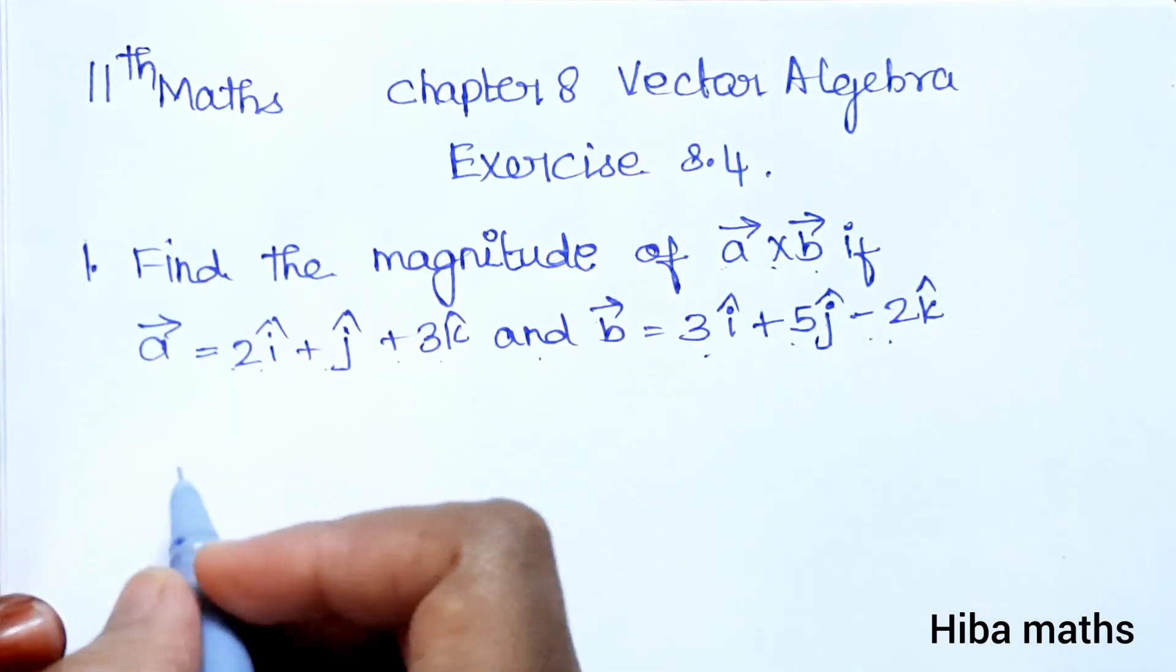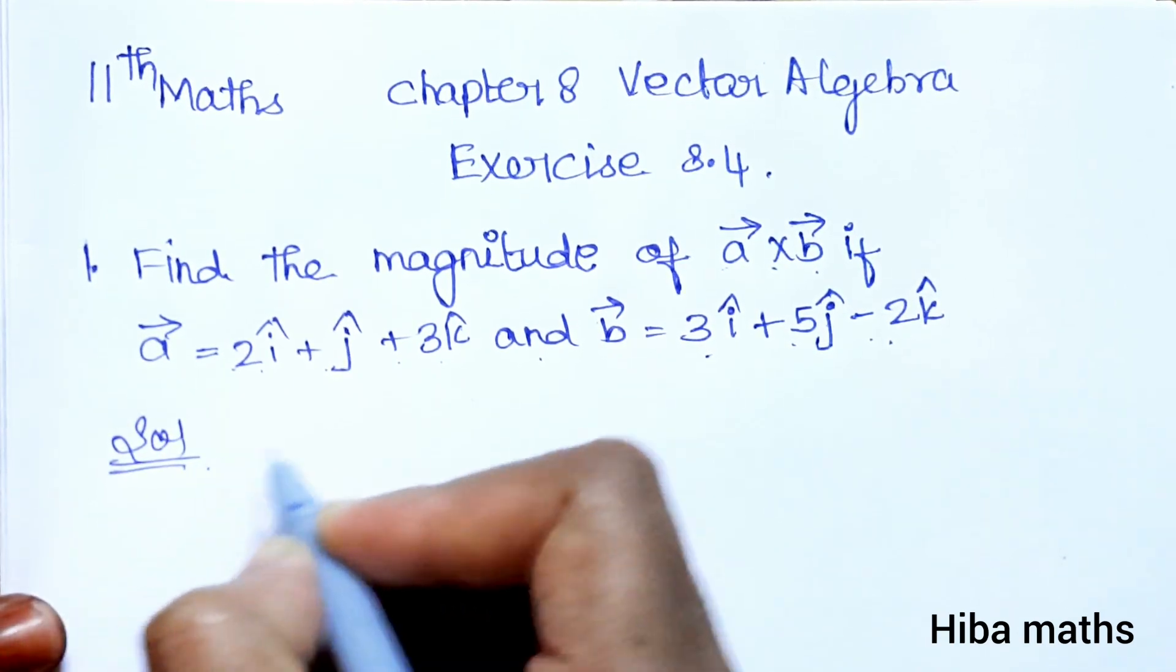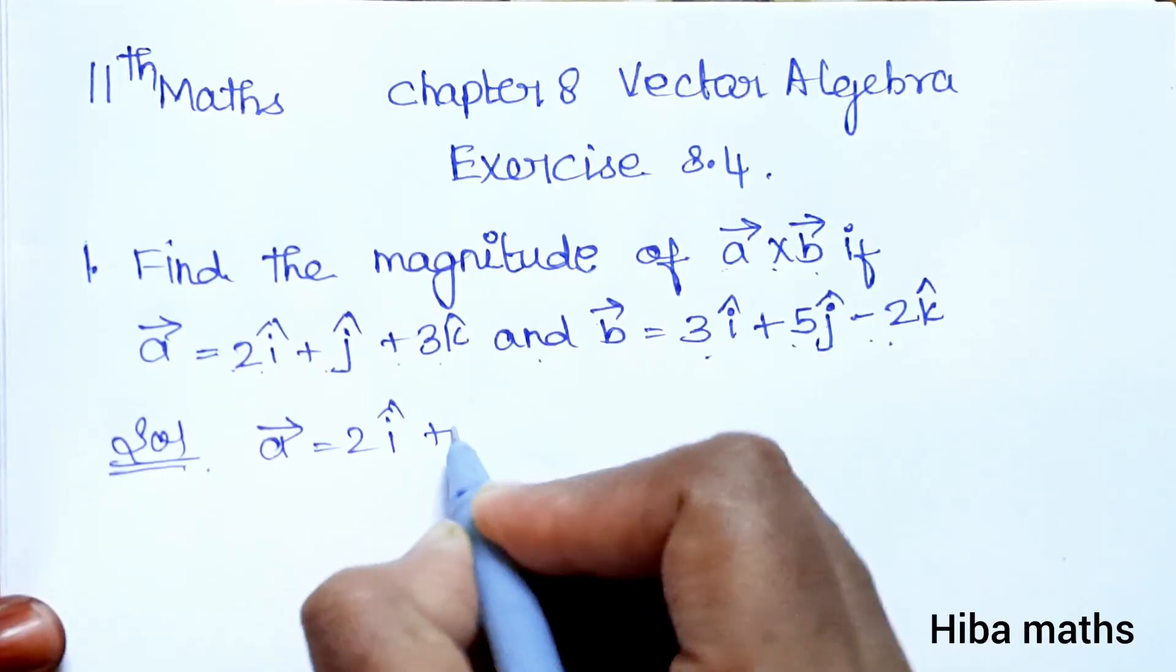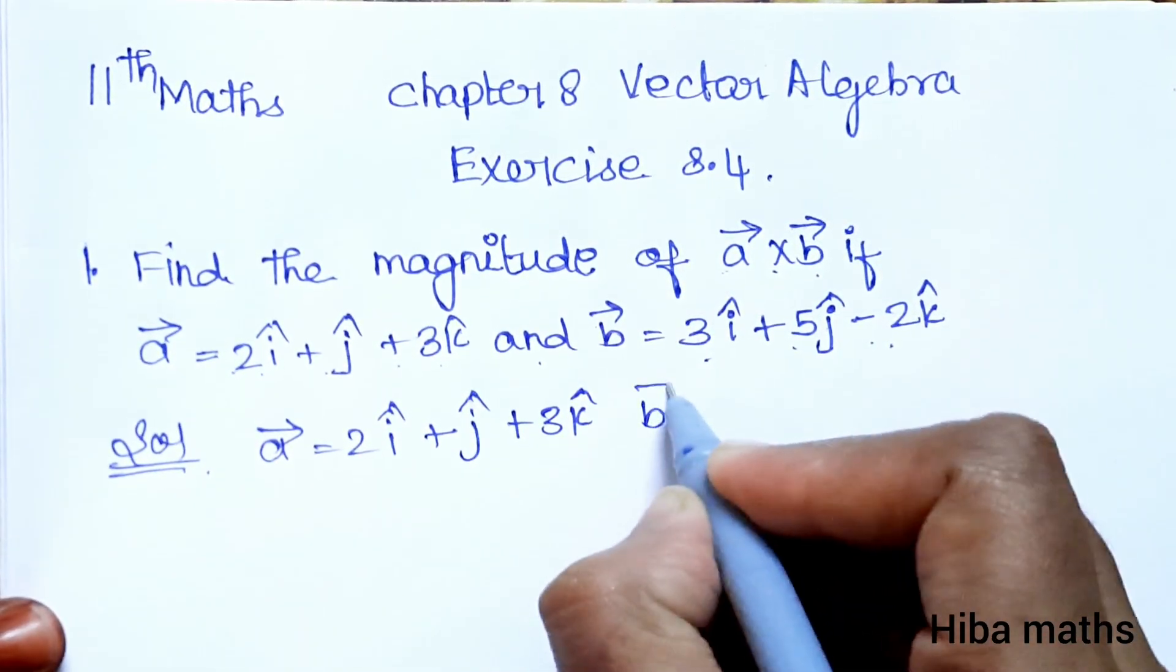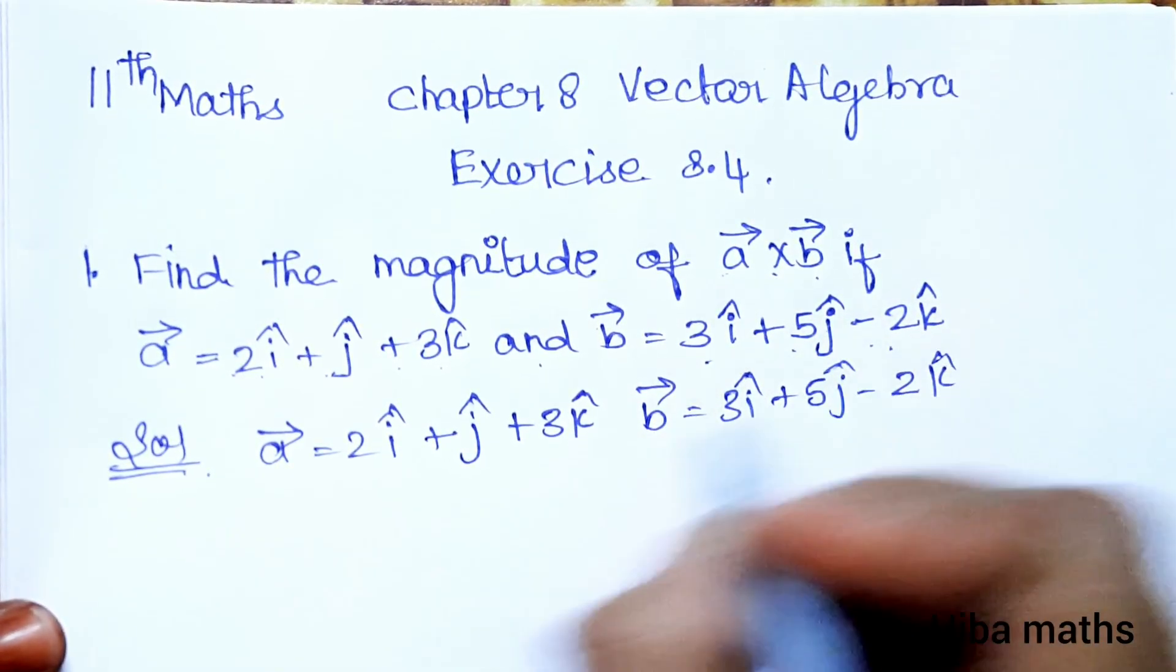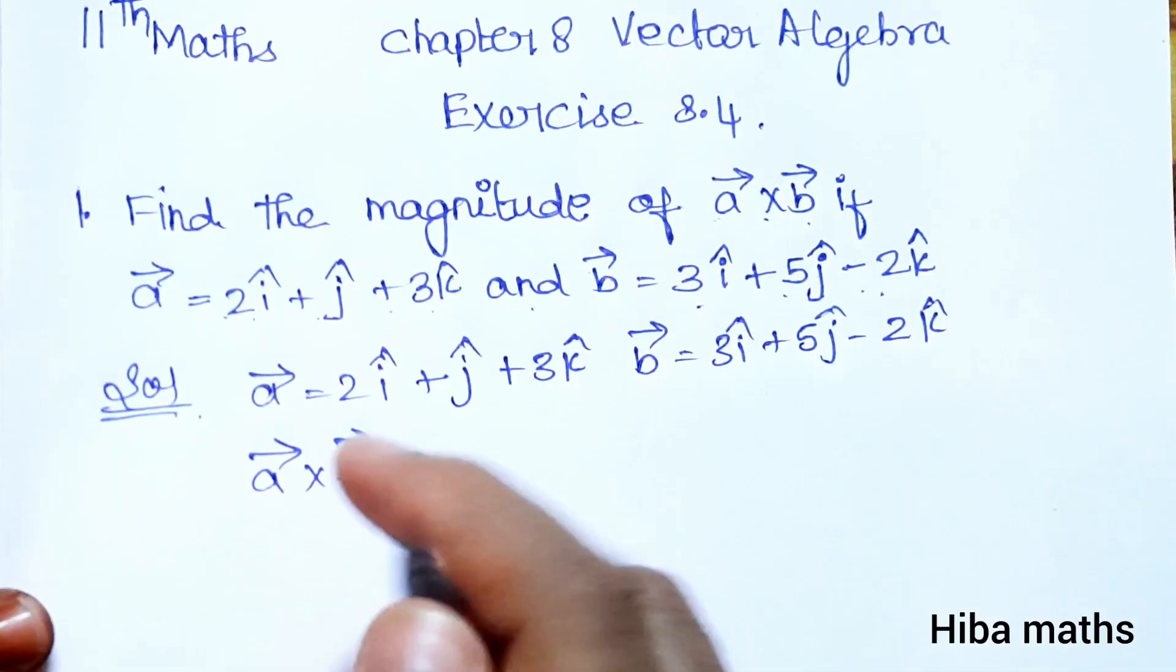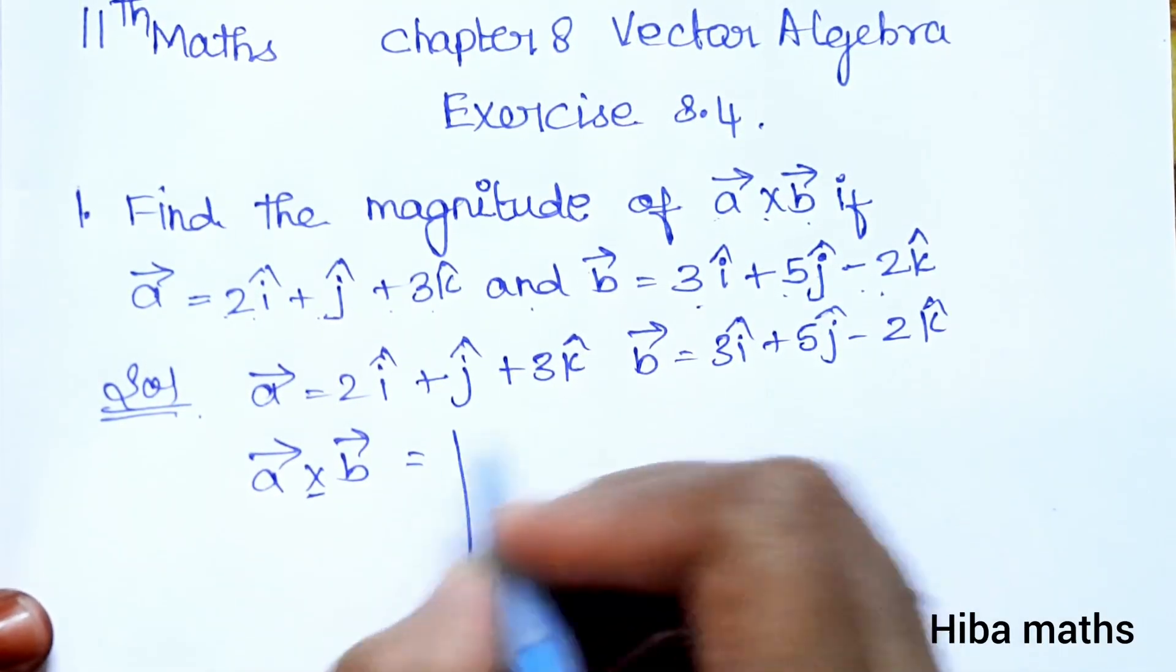We need to find the magnitude of A vector cross B vector. The magnitude is the modulus. For A vector cross B vector, we will do the cross product calculation using matrix format.